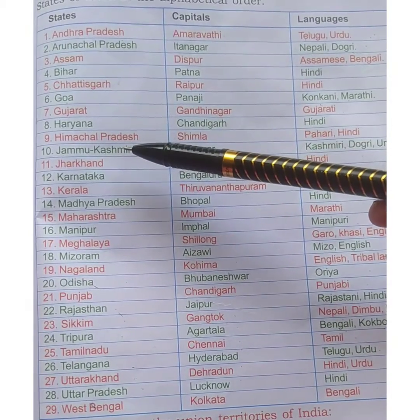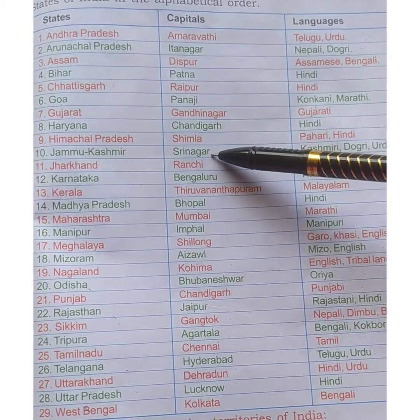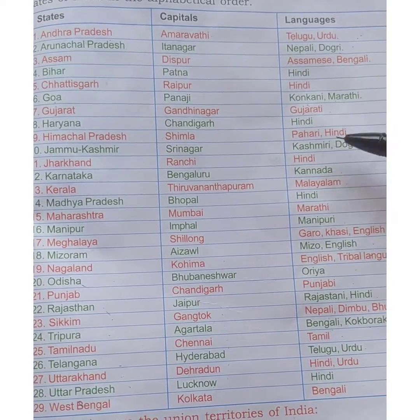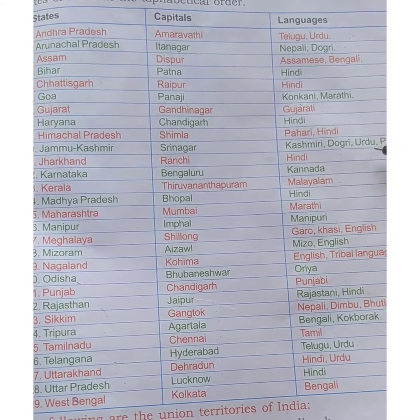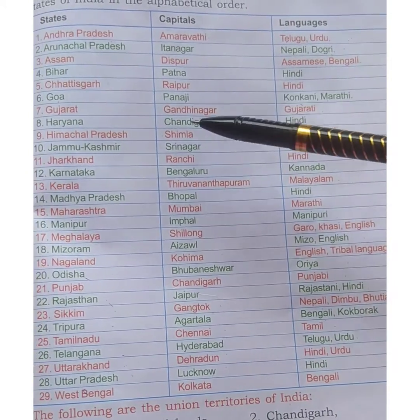Next is Jammu and Kashmir. The capital is Srinagar. The languages spoken are Kashmiri, Dogri, Urdu, and Pahari.